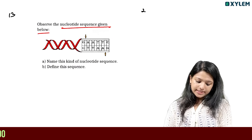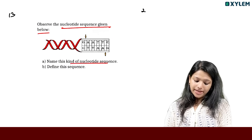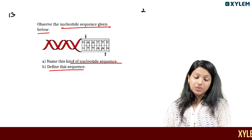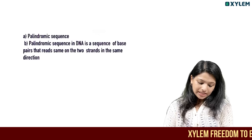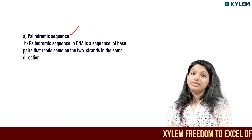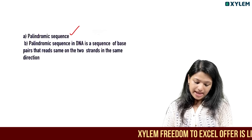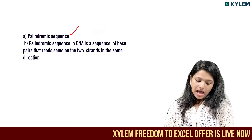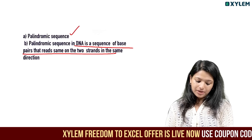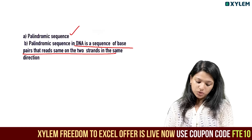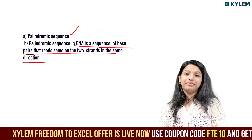Observe the nucleotide sequence given below. Name this kind of nucleotide sequence and define it. This is the palindromic sequence: GAATTC. It is a sequence of base pairs that reads the same on both strands in the same direction.